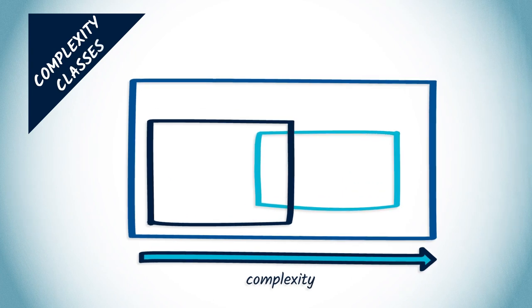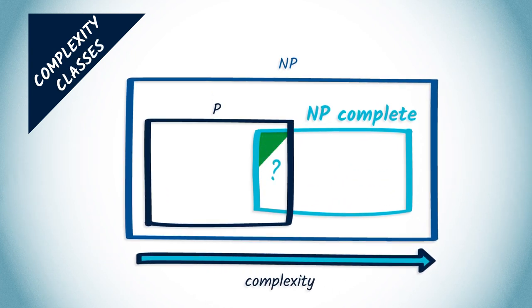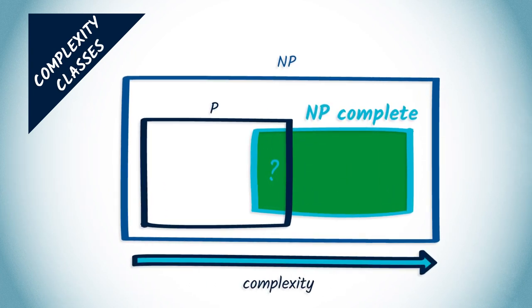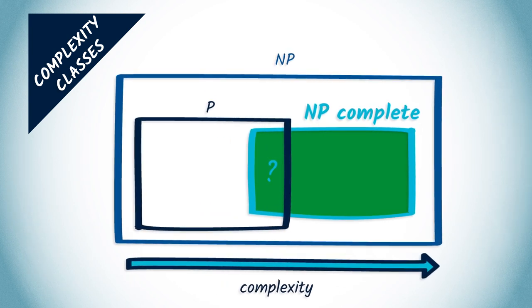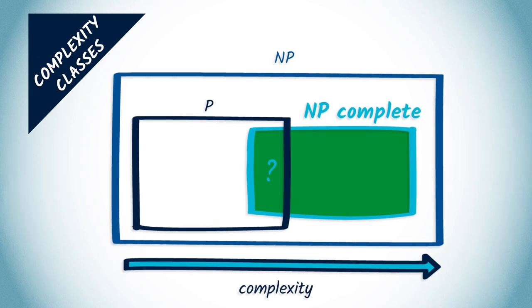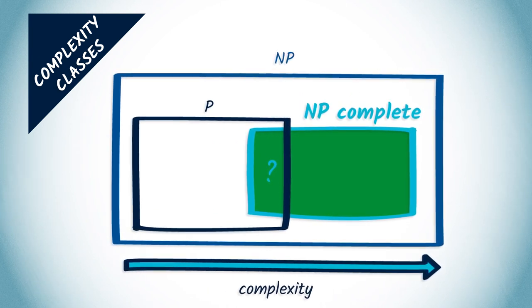Another famous class of problems is NP-complete problems. NP-complete problems are at least as difficult to solve as all other NP problems. In other words, an algorithm that can solve an NP-complete problem can solve any other NP problem. You would just have to rewrite the input and reinterpret the output to adapt it to the new problem. These rewrites can be done using polynomial algorithms.